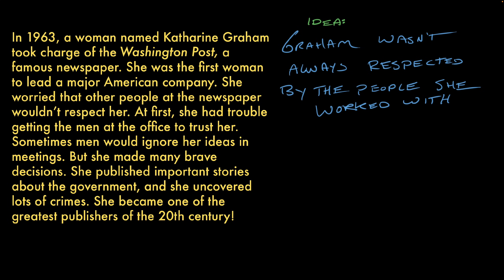Step two, what details support that idea? What evidence in the text is proof of that idea? The text says she was worried that other people wouldn't respect her. That's not entirely on target, even though it has the word respect in it. This detail shows that she was afraid that she would not be respected, but that's not evidence of it actually happening. But if we keep reading, I see she had trouble getting the men at the office to trust her. I said that part of being respected is being trusted, so that seems directly related to the idea I'm trying to support.